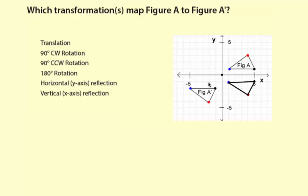It would be 1, 2, 3, 4, 5, 6 right, and 1 down, and that would map you exactly to figure A prime.